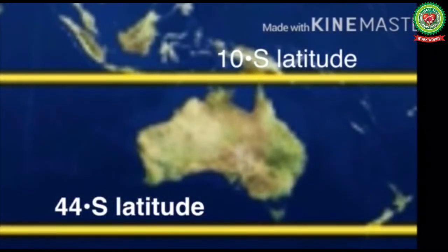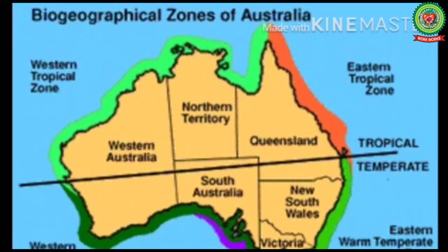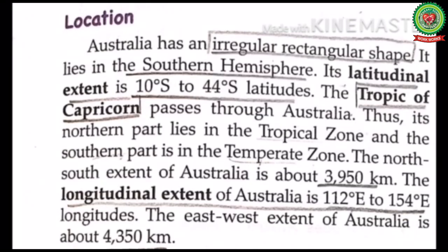Australia has an irregular rectangular shape. It lies in the southern hemisphere. Its latitudinal extent is 10 degrees south to 44 degrees south. The Tropic of Capricorn passes through Australia, so its northern part lies in the tropical zone and the southern part is in the temperate zone.